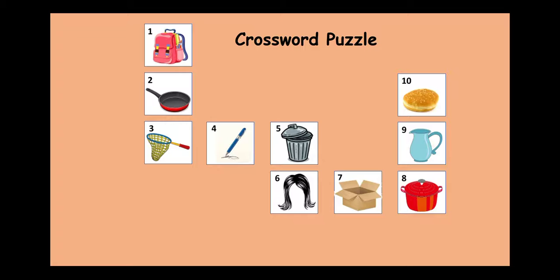Okay, now see the crossword puzzle carefully. What is the first picture? Bag. Second, pan. Third, third one is net. Fourth is pen. Fifth is bin. Sixth, weight. Seventh, box. Eight, pot. Nine, jug. And the last picture is bun. Yes.